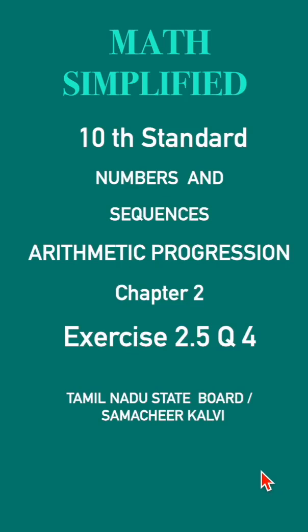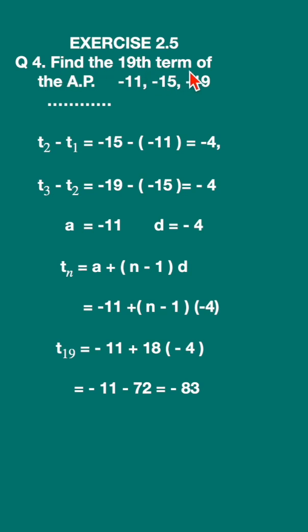Exercise 2.5 question 4, find the 19th term of the AP minus 11, minus 15, minus 19 and so on.